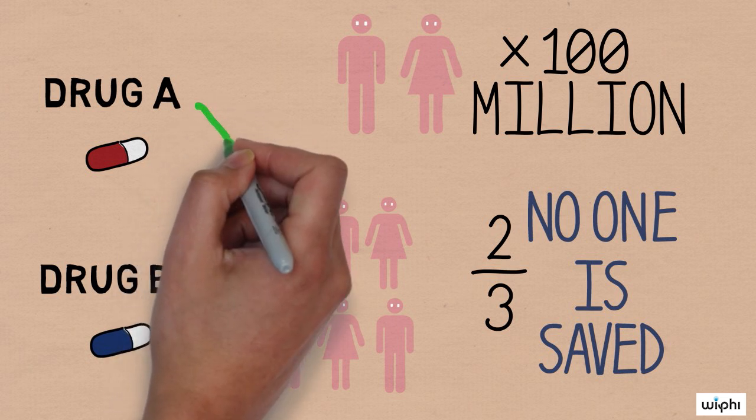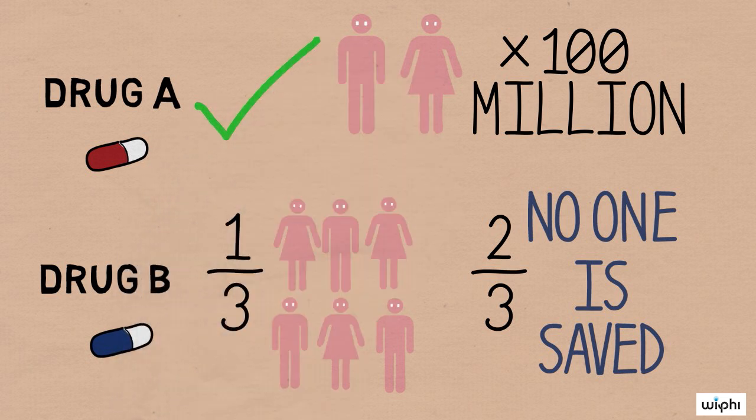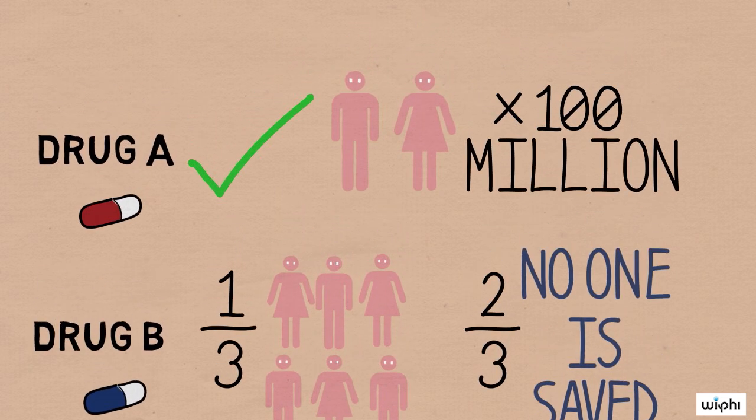You probably thought drug A was the best one. After all, with drug A, 200 million people will be saved for sure, which is a pretty good outcome.